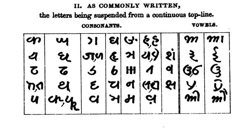Kaithi has several script-specific punctuation marks. General punctuation is also used with Kaithi. A plus sign can be used to mark phrase boundaries. Hyphen and hyphen-minus can be used for hyphenation. A word separator middle dot can be used as a word boundary.